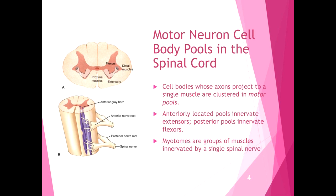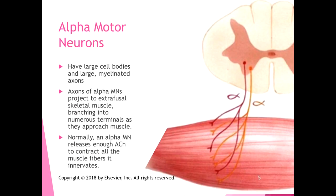A myotome is a group of muscles innervated by a single spinal nerve. We've talked about dermatomes — the skin area innervated by a single spinal nerve. Myotomes are the equivalent for groups of muscles. Alpha motor neurons live in the ventral horn of the spinal cord and have large cell bodies and large myelinated axons.